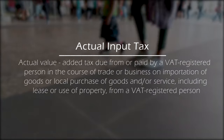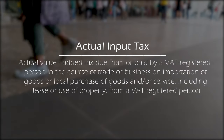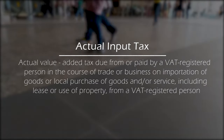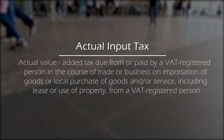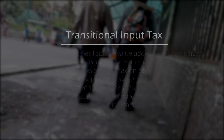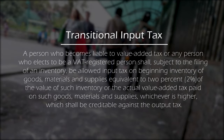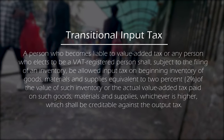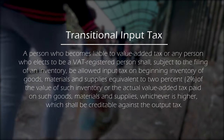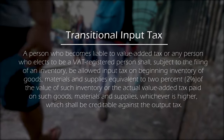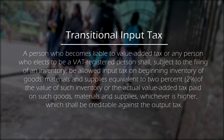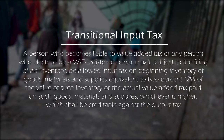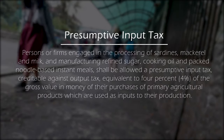Actual input tax is the 12% VAT on the purchase of goods and/or services or importation of goods of a VAT-registered entity. For transitional input tax, a person who becomes liable to VAT or voluntarily becomes VAT registered shall be allowed input tax on beginning inventory equivalent to 2%, or actual VAT paid for such goods, materials, and supplies, whichever is higher, creditable against related output VAT.